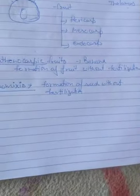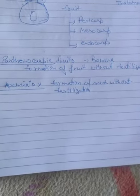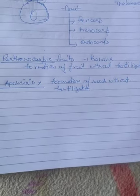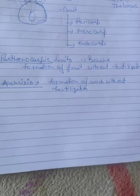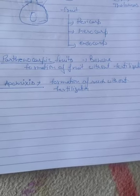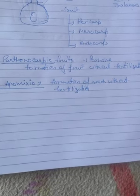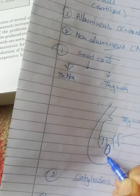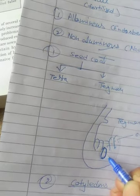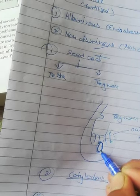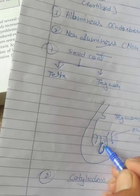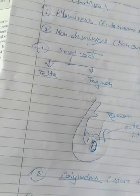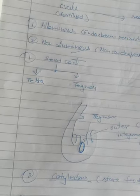You might be confused between parthenocarpic fruits and apomixis, so I am clarifying: parthenocarpic fruits are those fruits which are formed without fertilization of the ovule, while apomixis refers to seeds that are formed without the process of fertilization. In apomixis, cells of the ovule — without undergoing meiosis — produce a diploid gamete, which then converts into a seed.